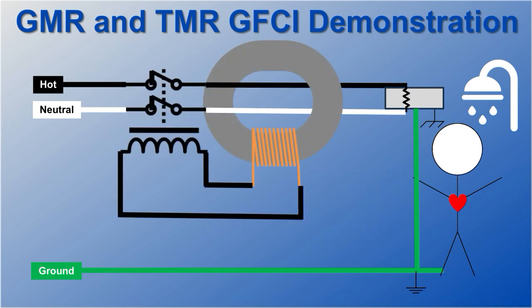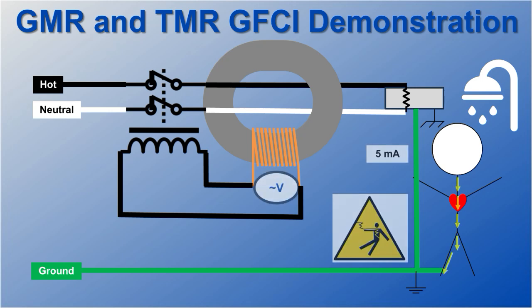Standard GFCI uses current transformers to measure any imbalance between the line and return currents on the hot and neutral wires.